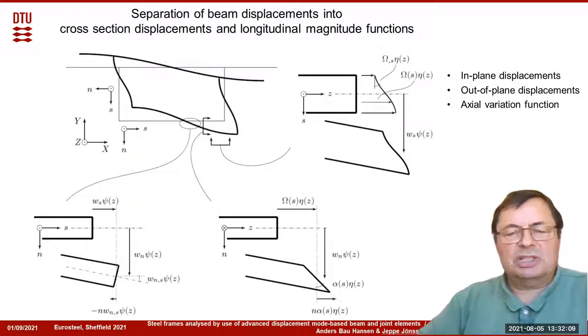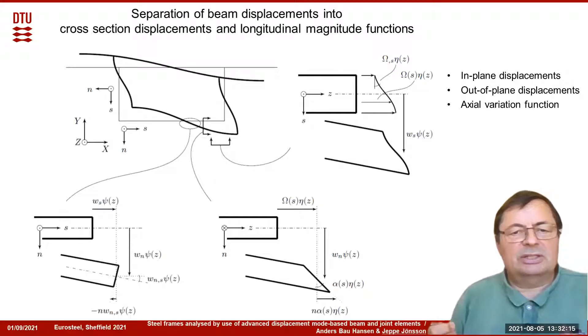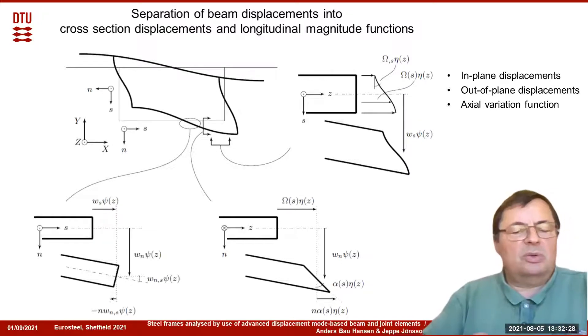The beam displacements are modeled by separation of displacements into cross section displacements multiplied by magnitude functions. The cross section displacement consists of in-plane and out-of-plane displacements. The in-plane describes what happens in the plane of the cross section, W_S along the section and W_N normal to the section, whereas the warping is described by omega values, and we can also describe the warping through the cross section.